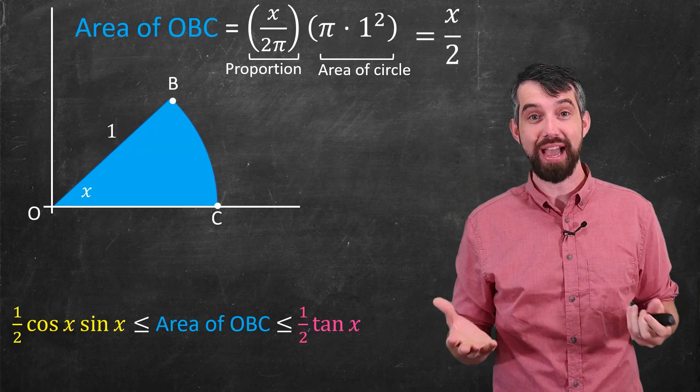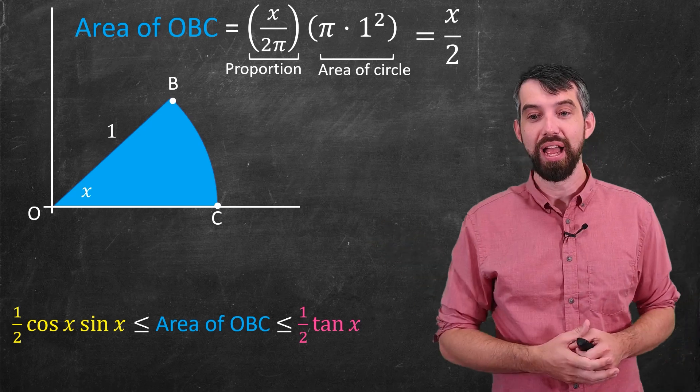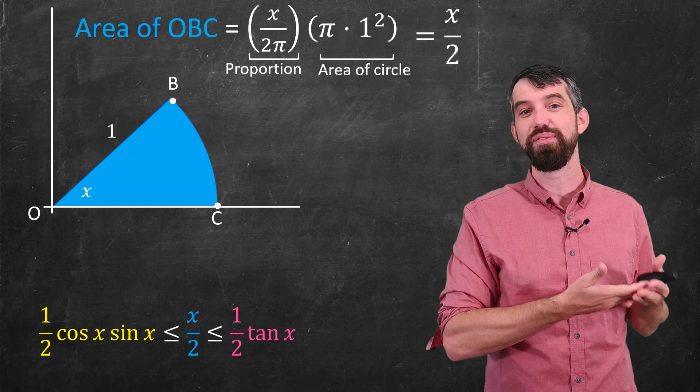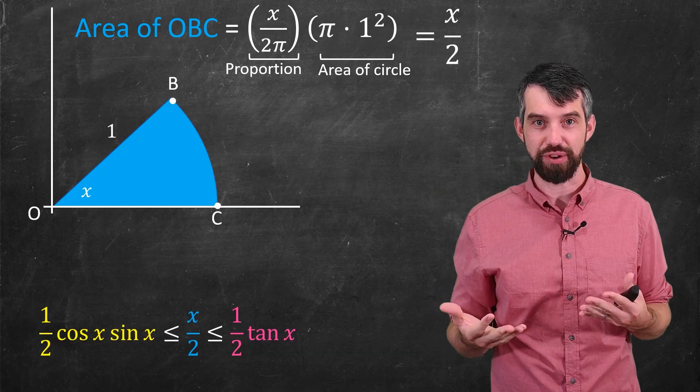Multiply these out and I get the value of x over 2, and so I can plug it in here and say that x divided by 2 is sandwiched between 1 half cos of x sine of x and 1 half tangent of x.